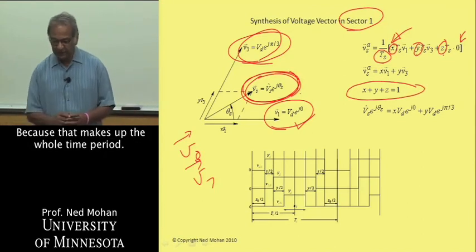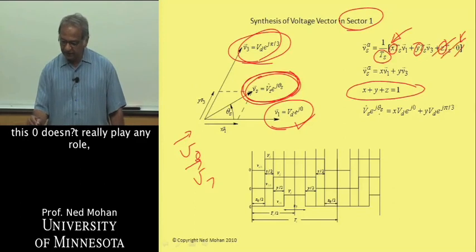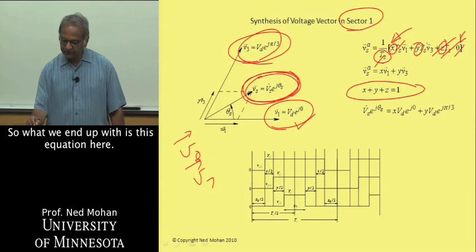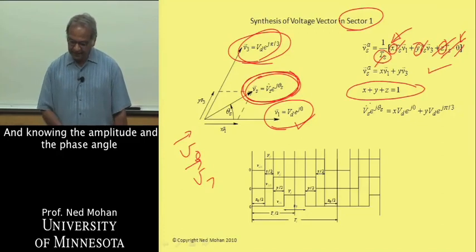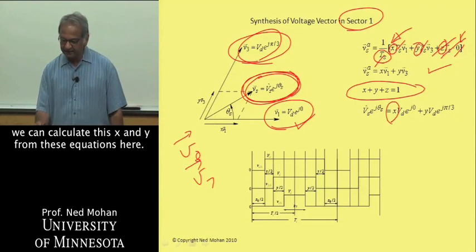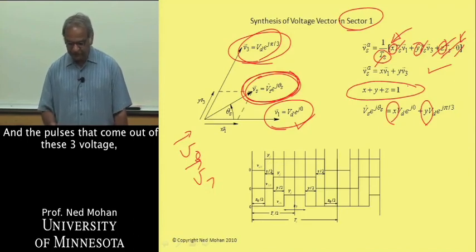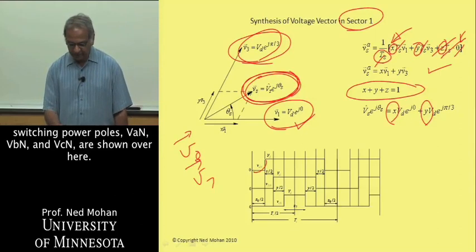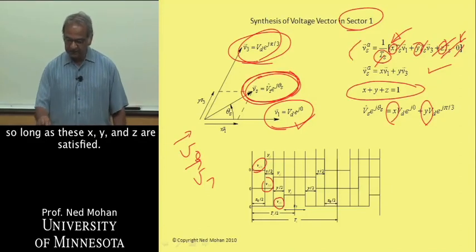As far as this voltage vector is concerned, this zero doesn't really play any role and TS and TS cancel out here. What we end up with is this equation here. Knowing the amplitude and the phase angle of this voltage space vector that we wish to synthesize, we can calculate this X and Y from these equations. The pulses that come out of these three voltage switching power poles, VAN, VBN, and VCN are shown over here. We have a great deal of flexibility how these pulses are produced so long as these X, Y, and Z are satisfied.